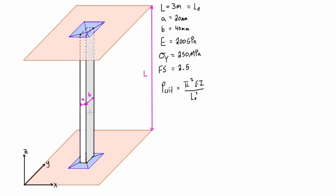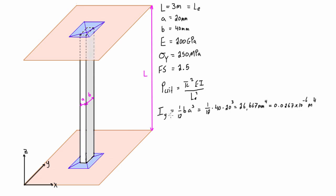Because we have a rectangular cross-section, we need two different moments of inertia depending on which direction we're considering. The moment of inertia about the Y axis is I_y = (1/12) × b × a³, which gives 0.0267 × 10⁻⁶ m⁴. The moment of inertia about the X axis, used for buckling in the XZ plane, is I_x = 0.1067 × 10⁻⁶ m⁴.